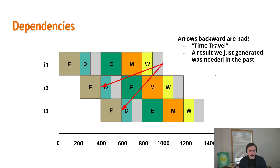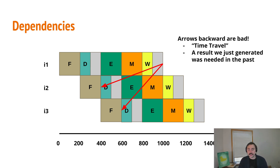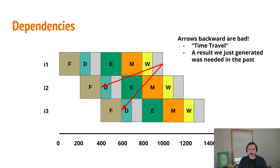Some of the terminology we're going to use: we'll represent dependencies with red arrows. The base of the arrow is where the result is being generated, and the arrow points to where it needs to be used. When looking at these diagrams, arrows to the left — ones going backwards — are the bad ones. These are the dependencies we have to watch out for.